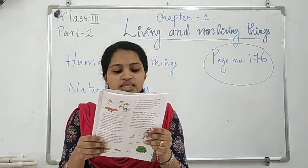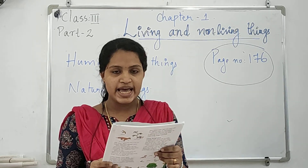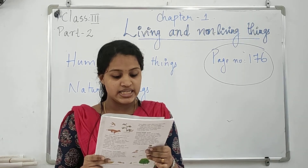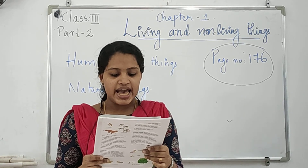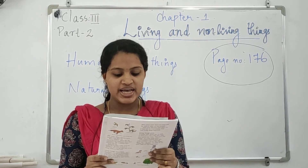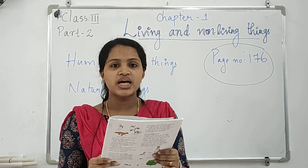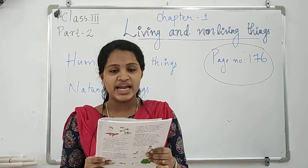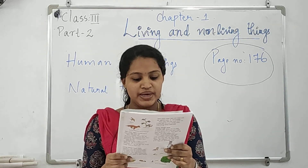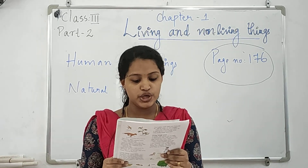Our earth is full of wonderful things. There are flowers and birds and aeroplanes and buildings. There are buses and bridges and air and water. Things like buildings, buses and bridges are made by humans. They are called human-made things. You please underline that sentence.